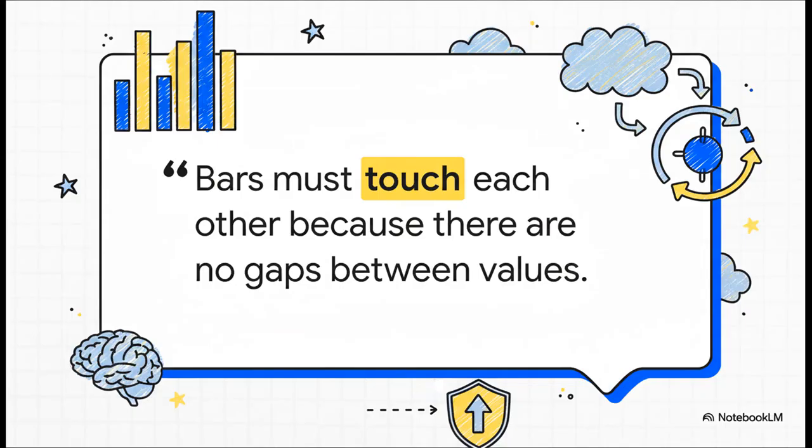And this is the absolute key detail you need to see. See how the bars are touching? That is not an accident. It's a really important visual cue that tells you the data is continuous. It means the data can be any value within a range, like a patient's age or weight. There are no gaps.